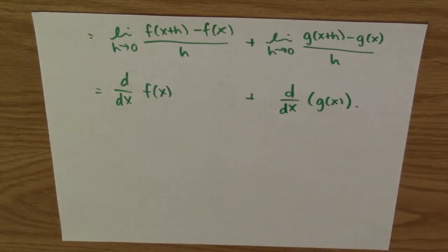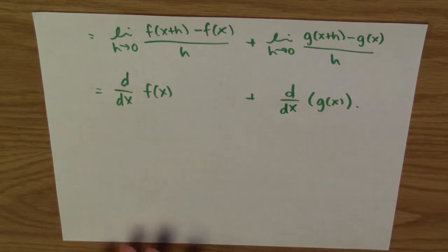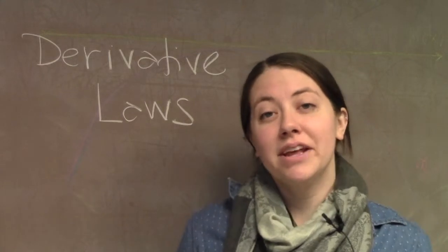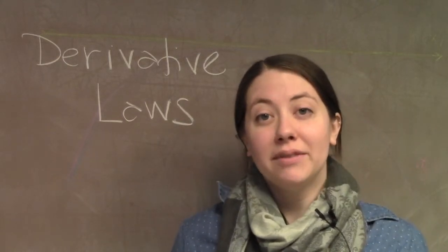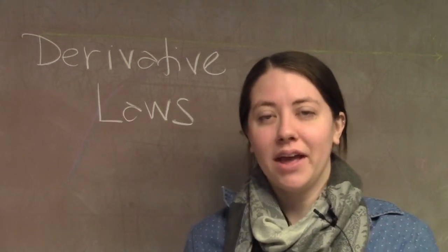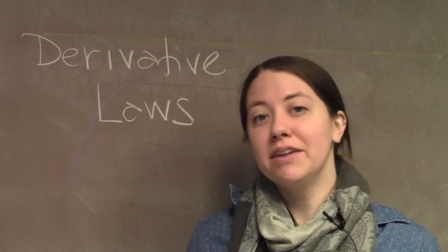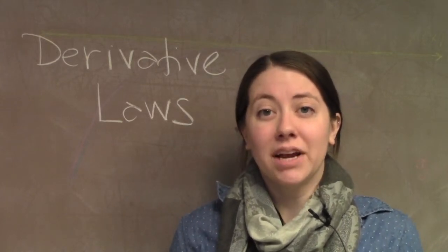After all of this algebra, what I have is the derivative of f plus the derivative of g. That's exactly what we were trying to prove — we started with the derivative of f(x) plus g(x), and we end up with the derivative of f plus the derivative of g. So now we've seen that the derivative of a sum is the sum of the derivatives. Any time I have two functions added together and I want to take the derivative, I can just take the derivative of the individual pieces and then add the derivatives together.